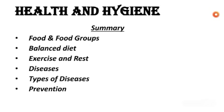Let us start with the chapter we studied previously — Health and Hygiene. In this chapter, we studied about food: what is food, how much is needed for our growth and development, and how food requirements vary according to age, occupation, and the type of work we do. We also saw the food groups and what is a balanced diet — a diet where all nutrients are present in proper proportion and adequate amounts to help you be fit and fine.